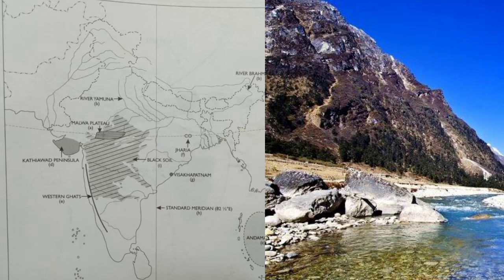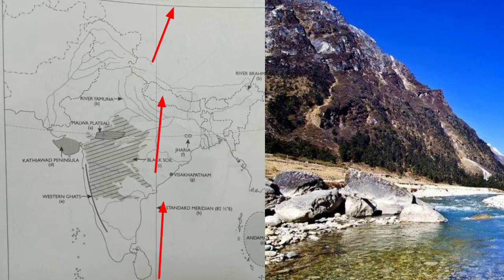Mark with a dot and name the port city of Visakhapatnam. Mark and name the longitude 82.5 degrees East — draw it easily. Mark and name an area where black soil is found.